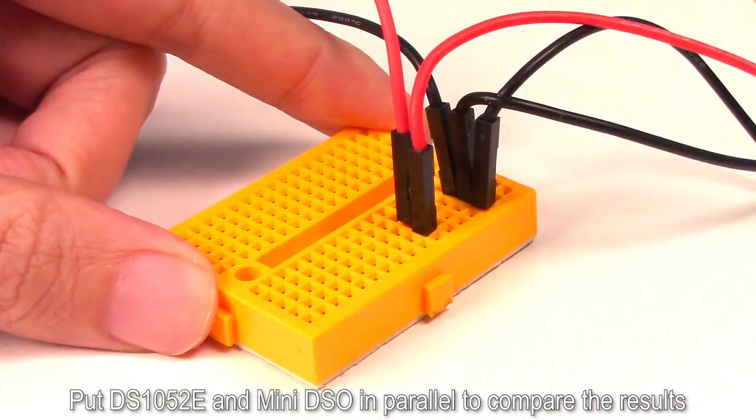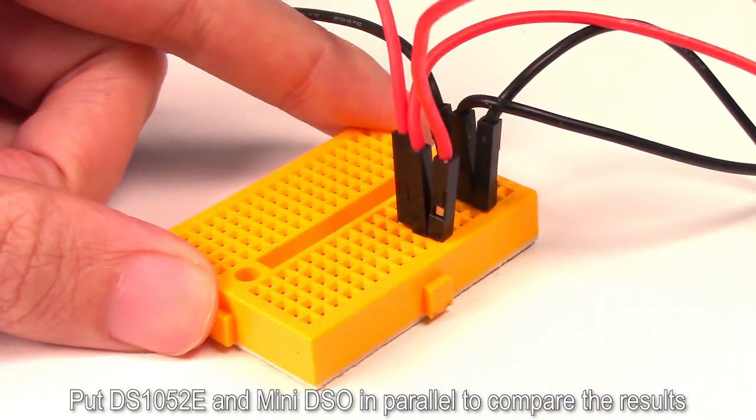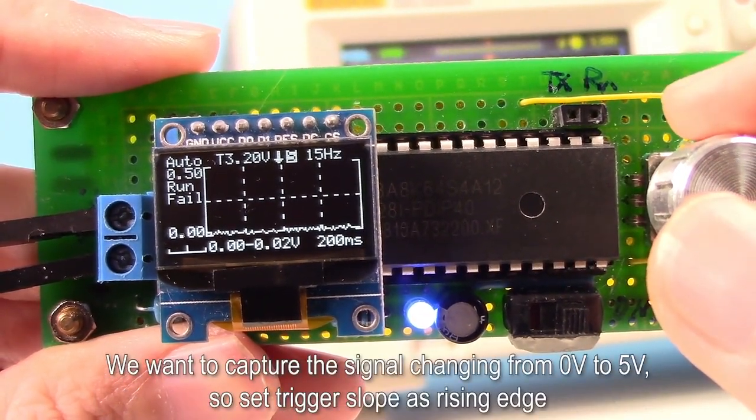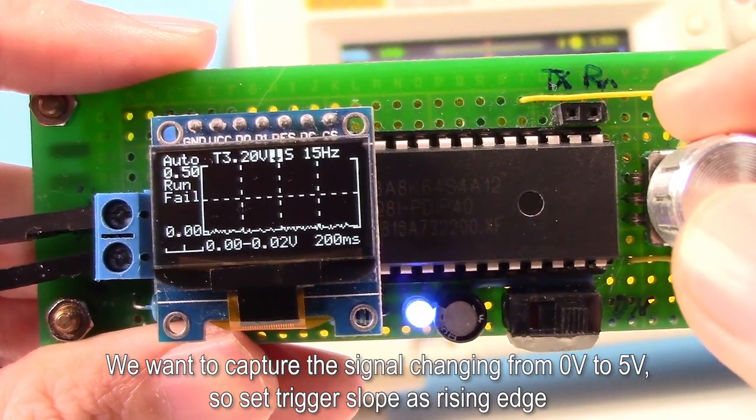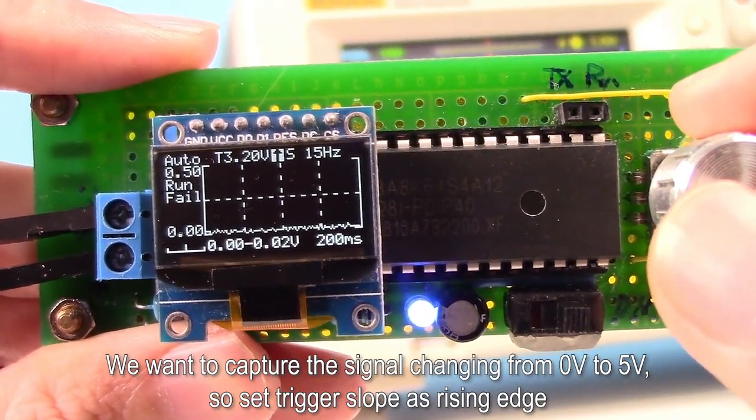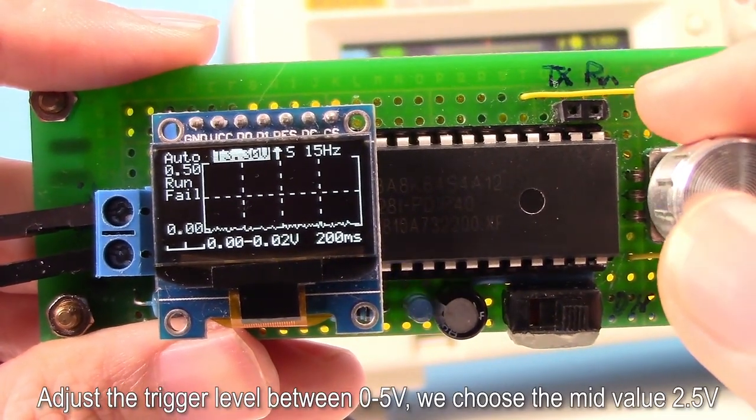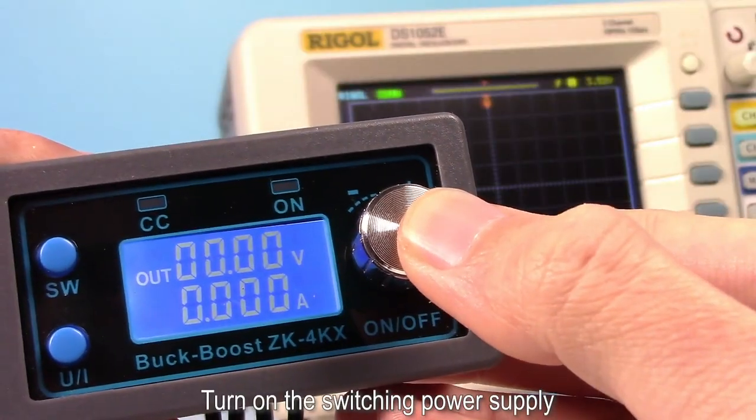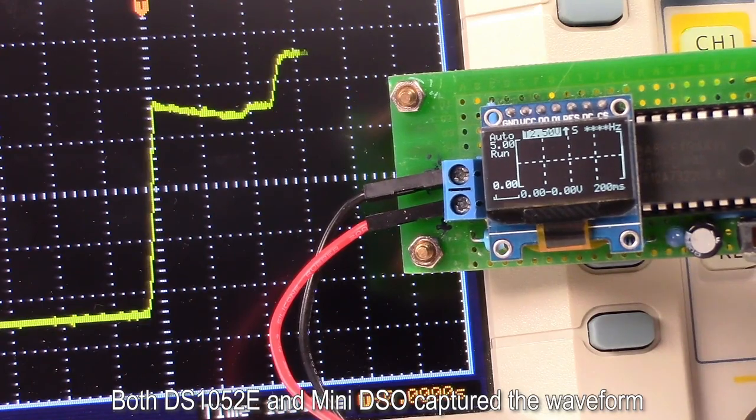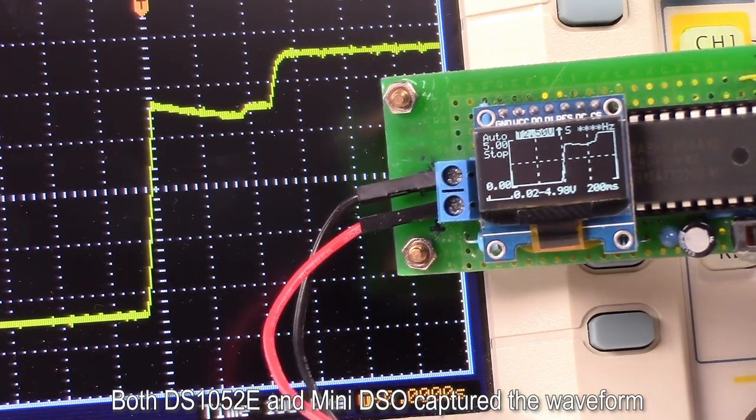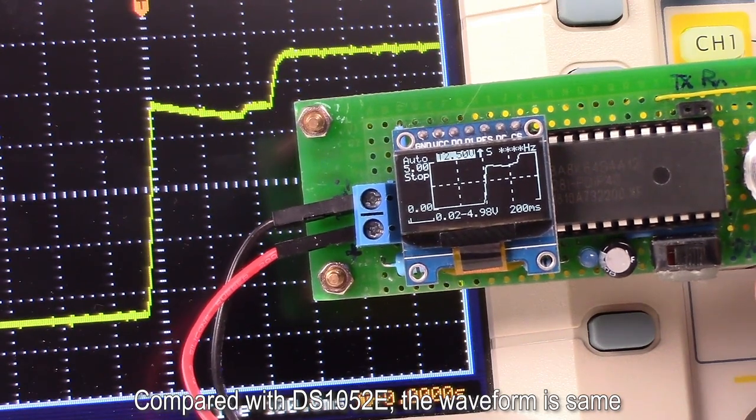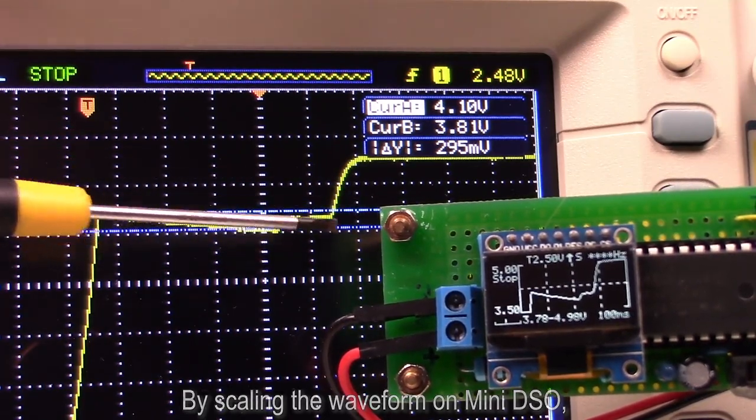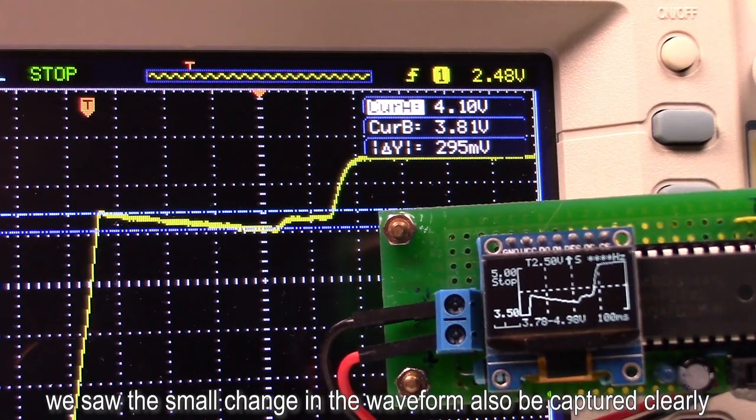Put DS1052E and MiniDSO in parallel to compare the results. Before input signal, we need to adjust the trigger settings. We want to capture the signal changing from 0V to 5V, so set trigger slope as rising edge. Adjust the trigger level between 0 to 5V. We choose the mid-value 2.5V. Turn on the switching power supply. Both DS1052E and MiniDSO capture the waveform. Compared with DS1052E, the waveform is same. By scaling the waveform on MiniDSO, we saw the small change in the waveform also be captured clearly.